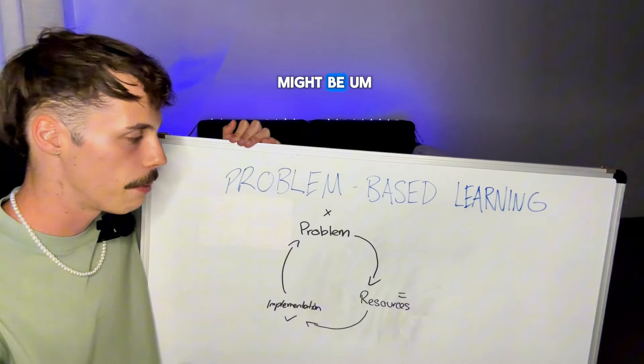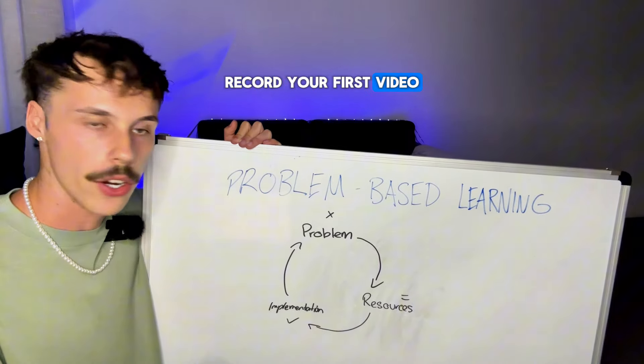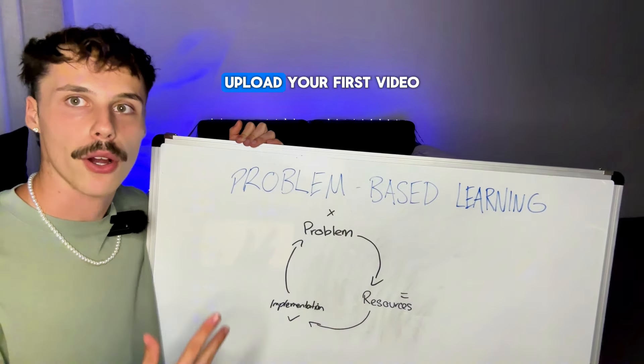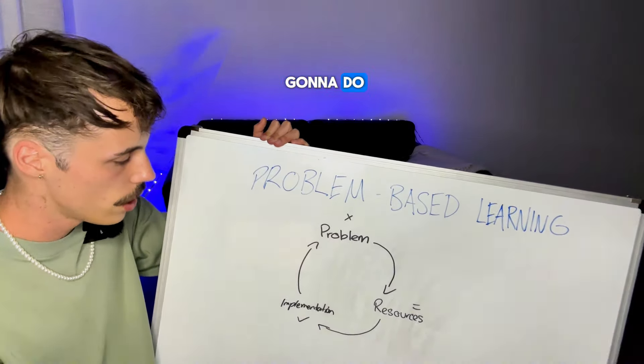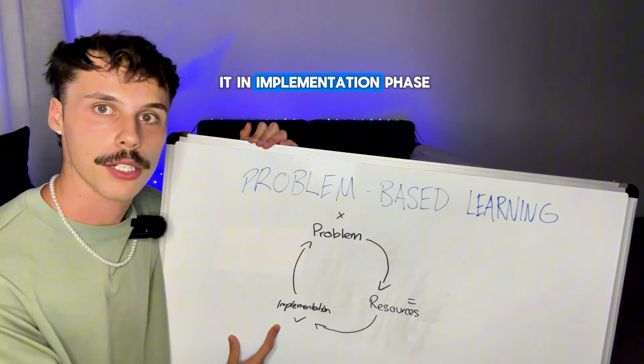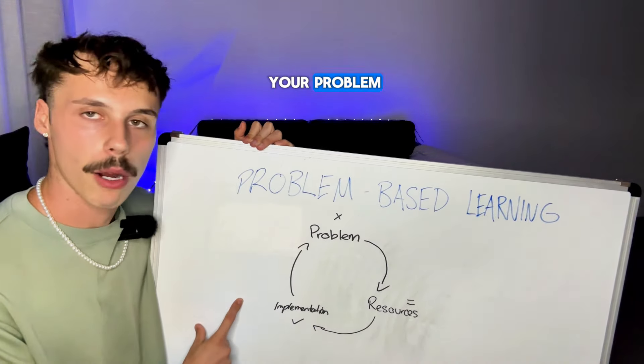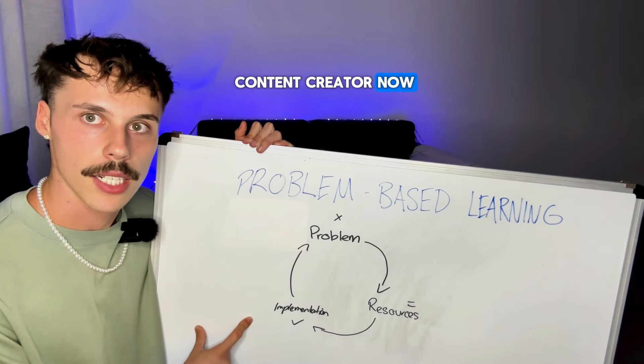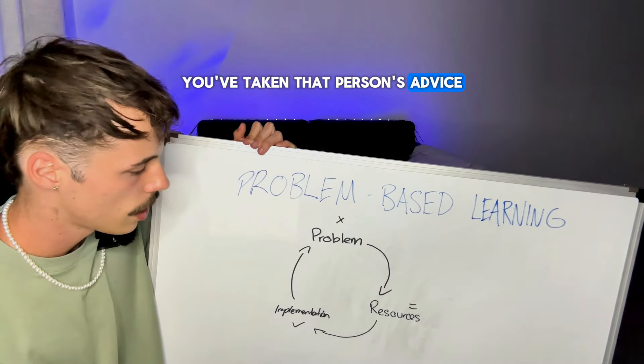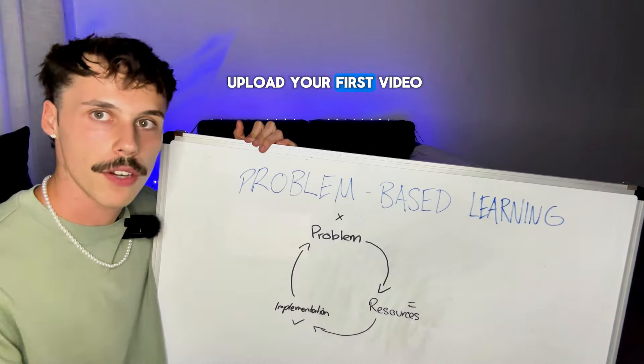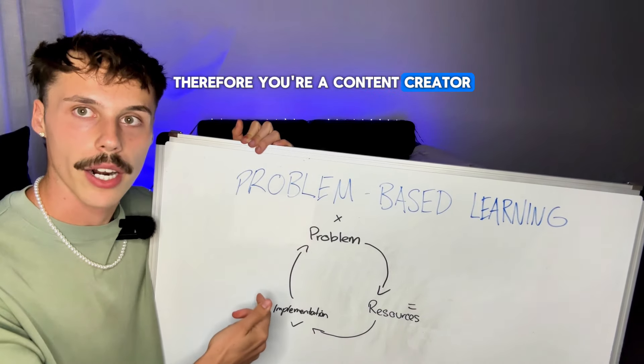So three steps might be record your first video, edit your first video, upload your first video. So what are you gonna do? You're actually gonna do it in the implementation phase. Now, that should solve your problem because you've become a content creator now. You've taken that person's advice, you've implemented it, you've uploaded your first video, therefore, you're a content creator.